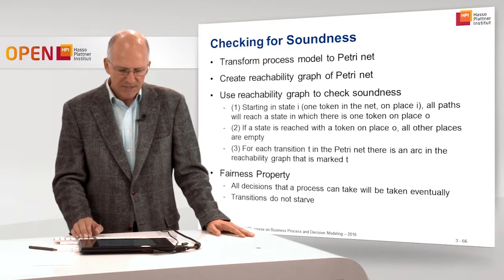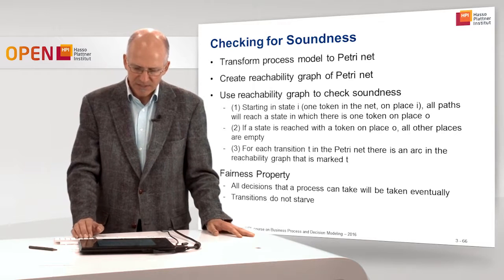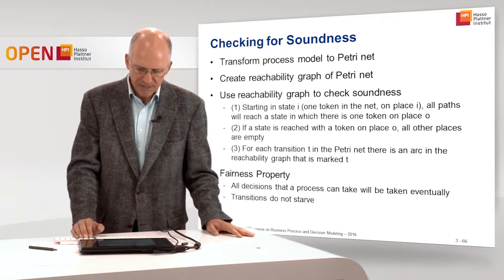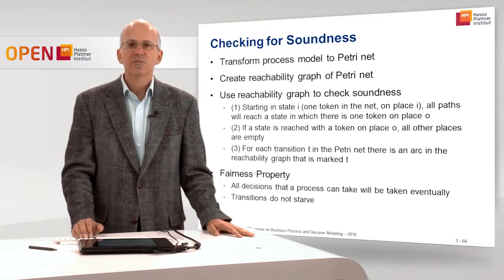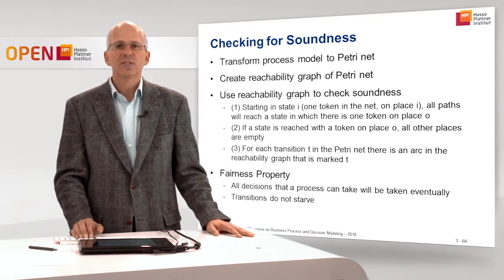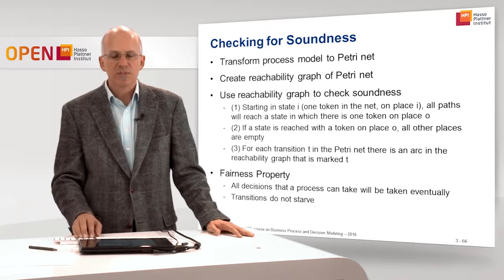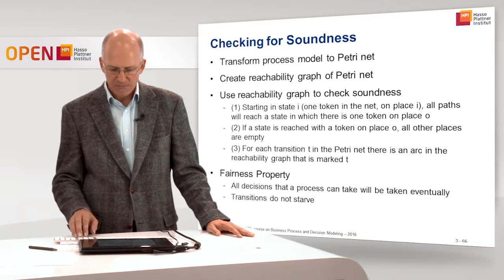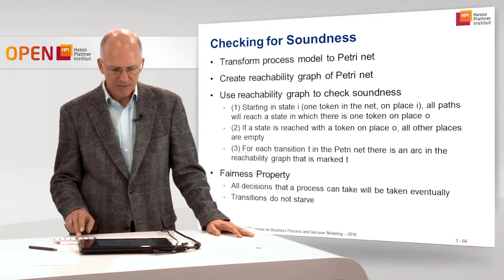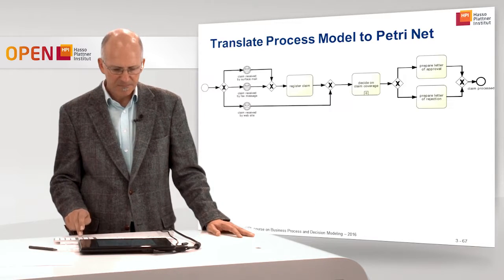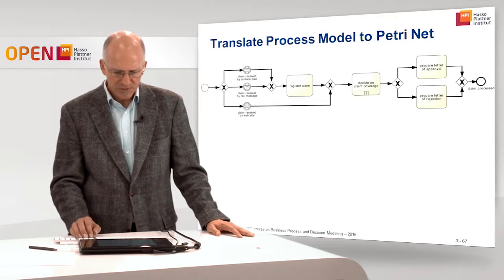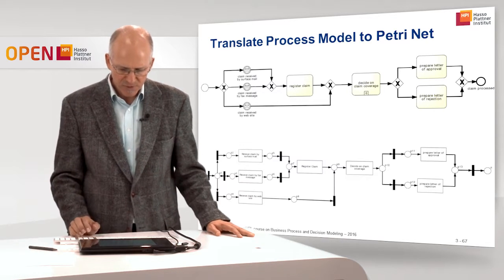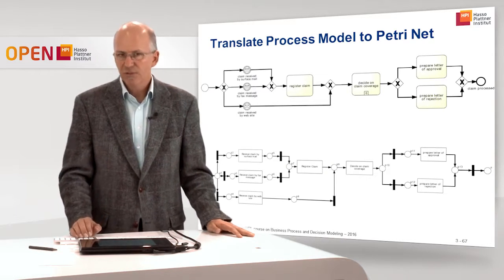There is a fairness property, meaning all decisions that a process can take will eventually be taken, so transitions do not starve. That's a typical fairness property that we also assume here for the analysis. So first, we translate the process model to a Petri Net — this is what we did in the previous video clip.